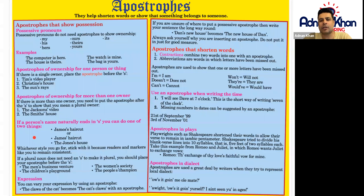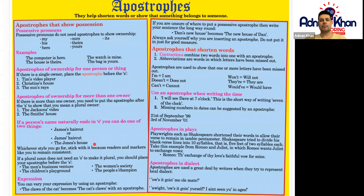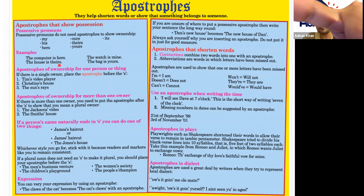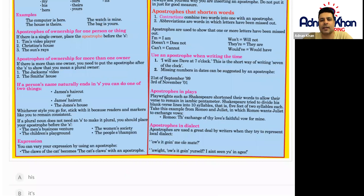If a person's name naturally ends in S, you have two choices. You can write James's haircut — placing an apostrophe after the S and adding another S — or simply James' haircut, with just an apostrophe after the S. Similarly, the Jones's house or the Jones' house are both acceptable. Whichever style you choose, stick with it, because readers and markers like you to remain consistent throughout one piece of writing.